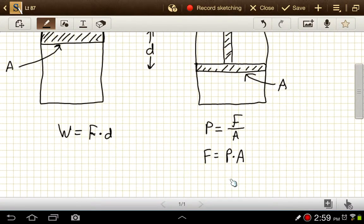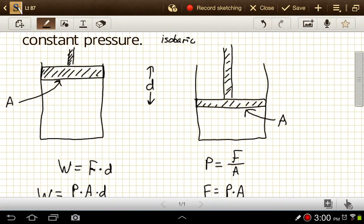So if I take this expression for force and bring it back to our work equation, work now is equal to the pressure times the area times the distance. Now the area of this thing, say this is a cylinder, so πr² for the cylinder, for the circle there.